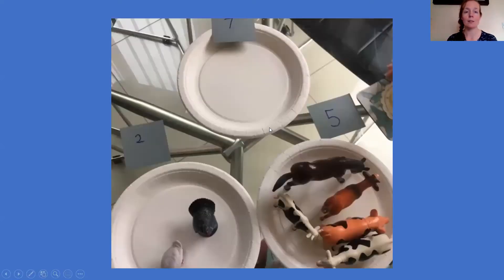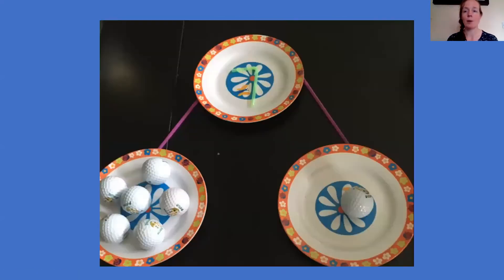And then this person's used farm animals and they've got some number cards as well to show the parts and the hole, which is fantastic. And then this person's used golf balls and they've got their hole up here, lovely, seven. Okay, and then they've used their golf balls to do the parts, which is fantastic. But remember, this week it's the number eight.